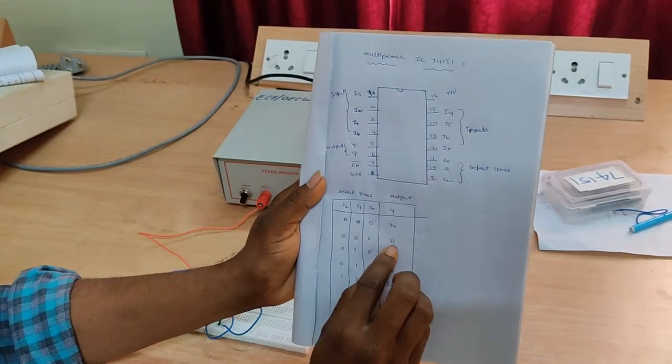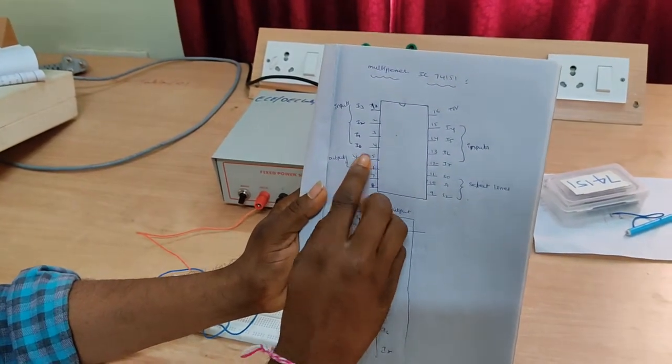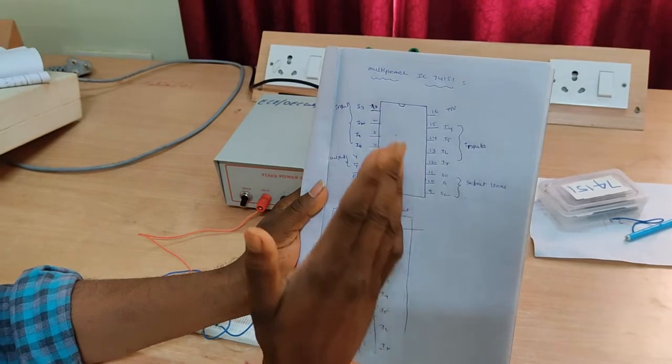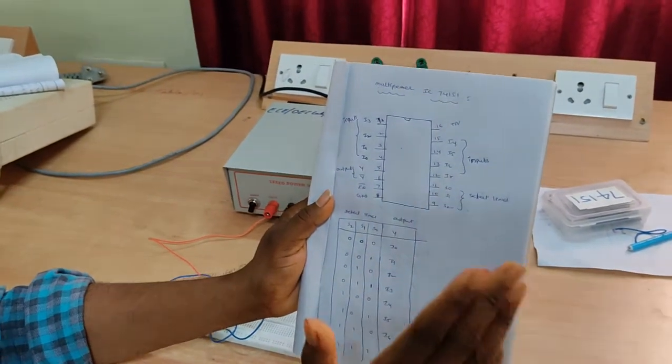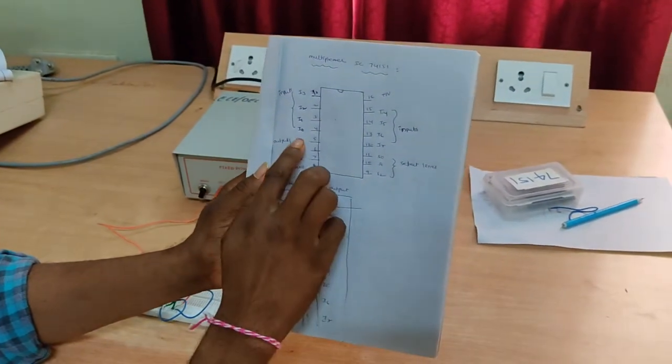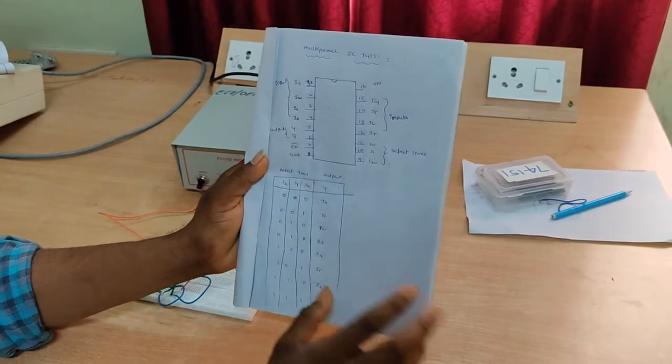So next 0, 0, 1. I1 is selected. So that means data from I1 is transferred to the output Y.